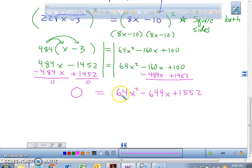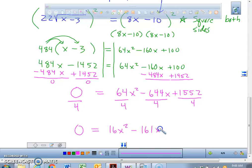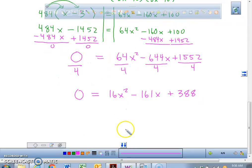Since we have some big numbers, the numbers that can go into 64 are 4, 16, and 8. So what I'm going to do right now, we're going to divide every single number by 4 just to make things a little bit easier. I'm going to have zero equals 16x squared minus 161x plus 388. Make sure you guys have that on your paper.